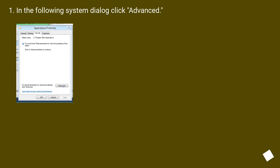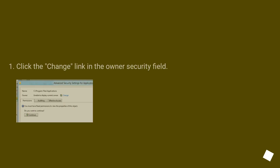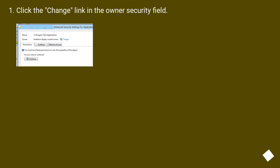In the following system dialog, click Advanced. Then click the Change link in the Owner security field.